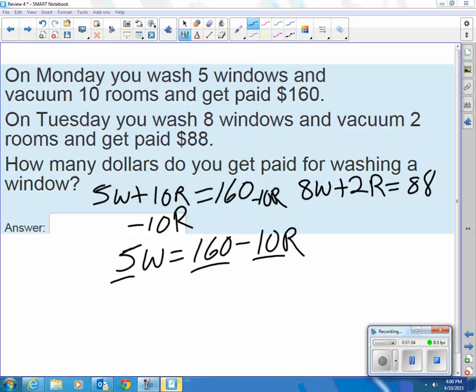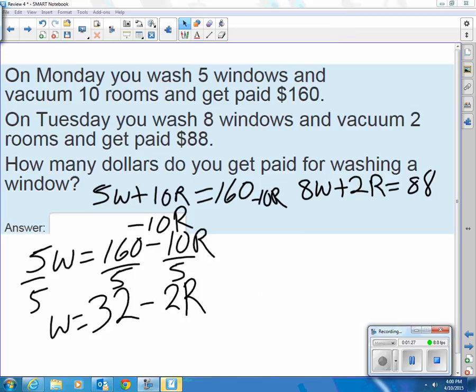I want to know what one window is worth. One window is worth $32 minus 2 of whatever I get paid for a room. So I can rewrite Tuesday's equation. 8 of whatever I get paid for a window, which is $32 minus 2 of whatever I get paid for a room, plus 2R equals 88.